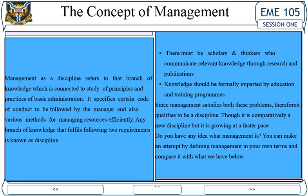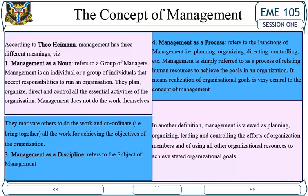Do you have any idea what management is? You can attempt to define management in your own terms and compare it with what follows. According to Henman, management has three different meanings. First, management as a noun refers to a group of managers — individuals or a group that accept responsibility to run an organization. They plan, organize, direct, and control all essential activities. Management does not do the work themselves; they motivate others to do the work and coordinate all efforts to achieve the objectives of the organization.